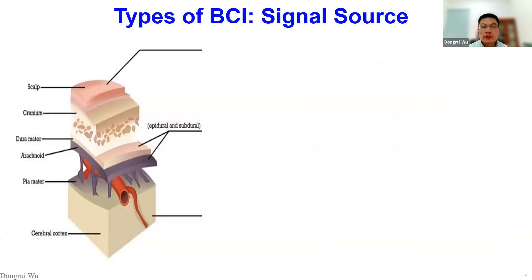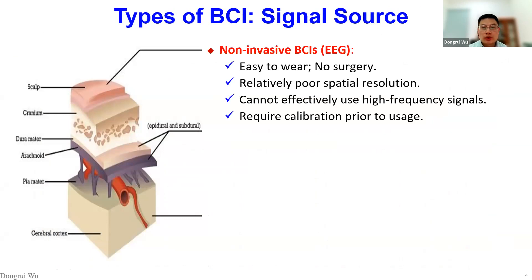According to different types of signal sources, we can partition BCI systems into three different categories. The first, and also the most frequently encountered, is non-invasive BCI. Here we collect brain signals from the scalp of the brain using an EEG headset. It has the benefit of being easy to wear because no surgery is needed, so it is very safe — actually no risk at all. This is its main advantage.